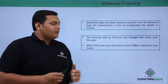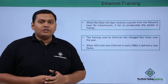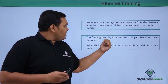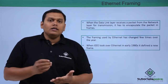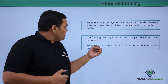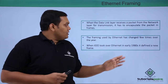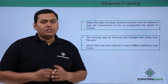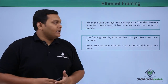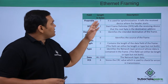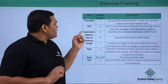The framing used by Ethernet has changed its form over the years, evolving from one phase to another. When IEEE took over Ethernet in the early 1980s, it defined a new frame structure. The frame structure contains fields with their length in bytes and a description of each field.